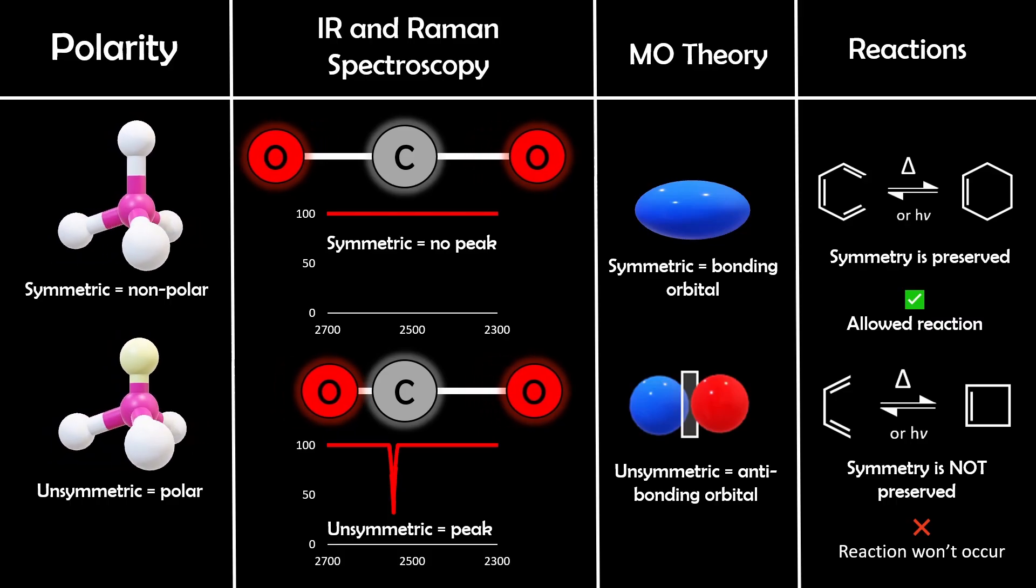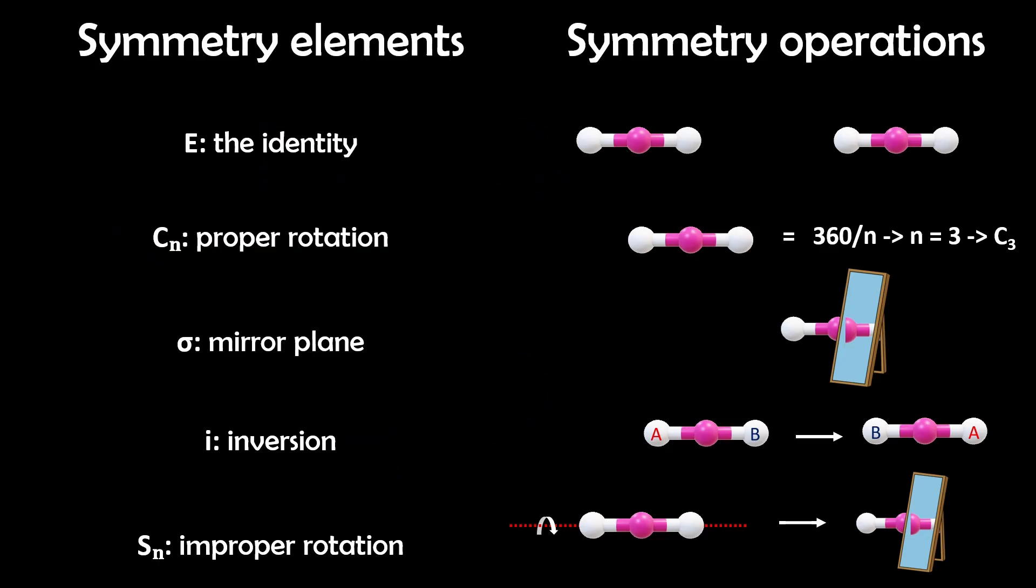So how do we figure out molecular symmetry? We look at two things, symmetry elements and symmetry operations. Symmetry elements, which are like features on which you perform symmetry operations, are E for identity, CN for proper rotation, sigma for mirror plane, I for inversion, and SN for improper rotation.